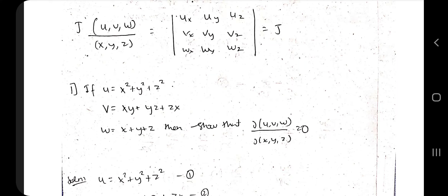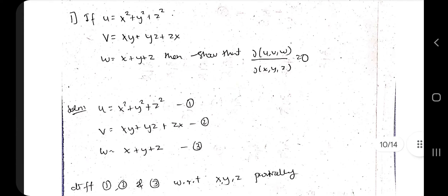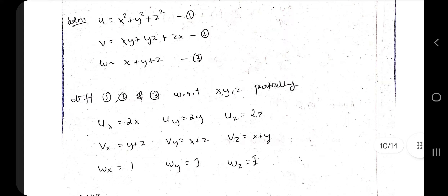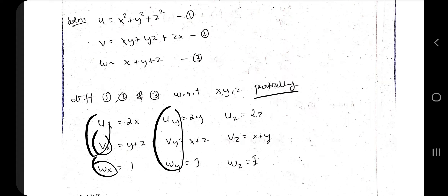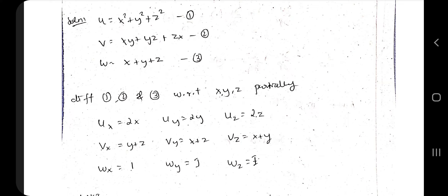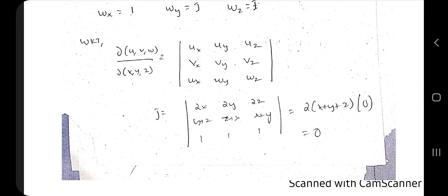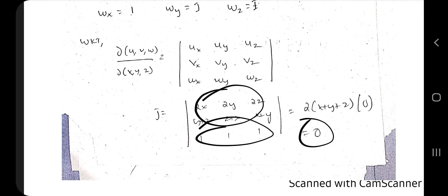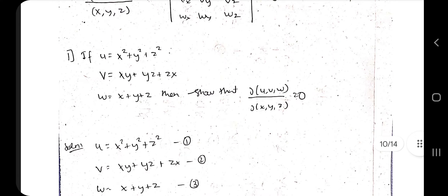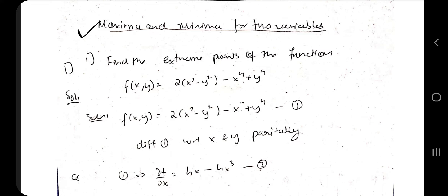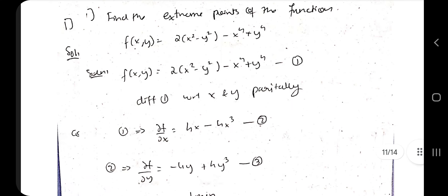The next topic is Jacobians. The Jacobian of three variables u, v, w with respect to x, y, z is written as a 3×3 determinant. For example, if u = x²+y²+z², v and w are given functions, you have to show the Jacobian equals zero. Write u, v, w and partially differentiate each with respect to x, y, z. Fill in the determinant matrix and evaluate — you'll get zero, proving the result.